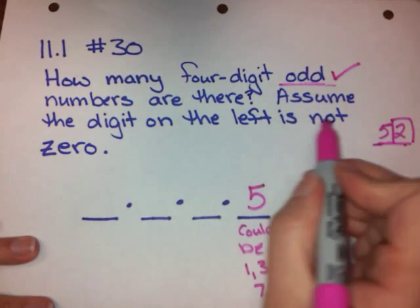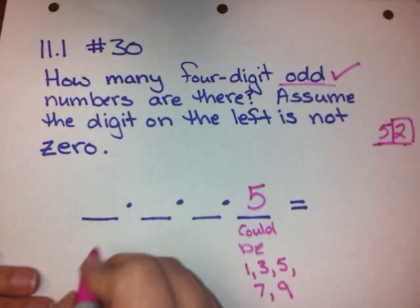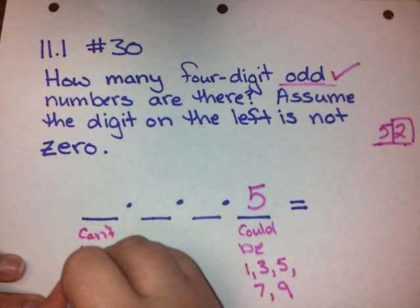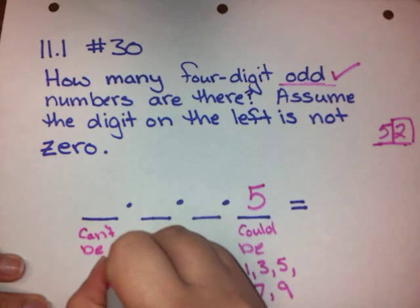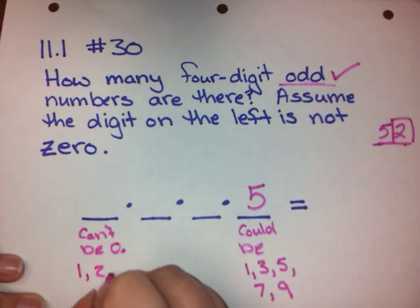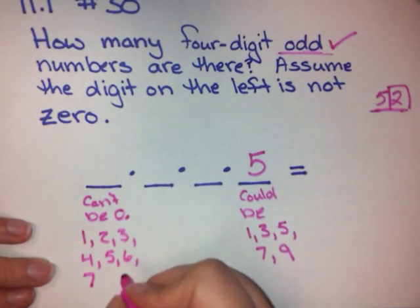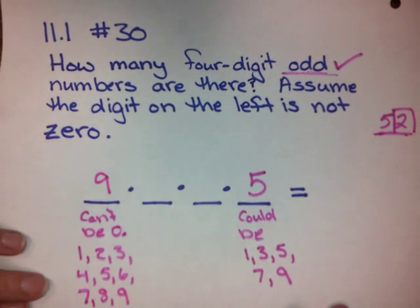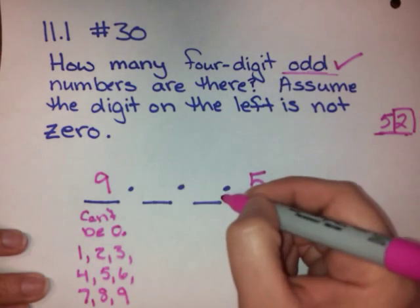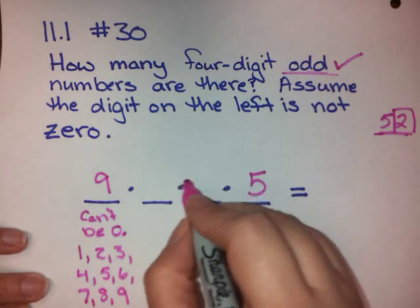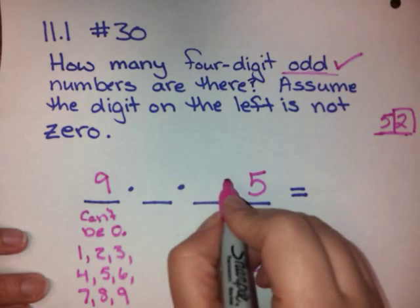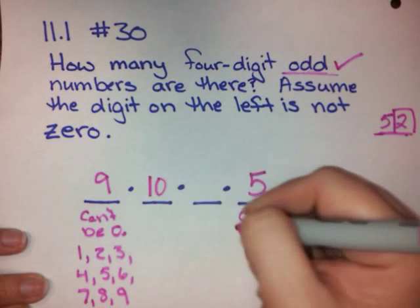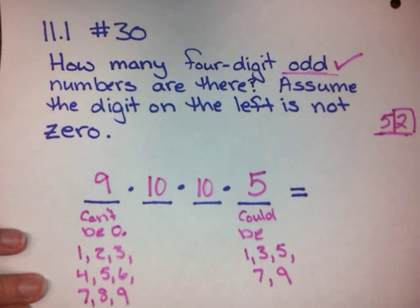We also need the digit on the left to not be zero. So the first digit can't be 0 — it could be 1, 2, 3, 4, 5, 6, 7, 8, or 9. So we have 9 choices for the first digit. Now for the other two middle digits, those could be anything at all — it doesn't matter whether they're even or odd, there's no restriction. So we have 10 choices for each of those.